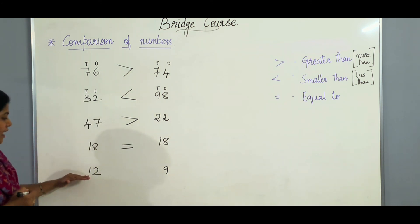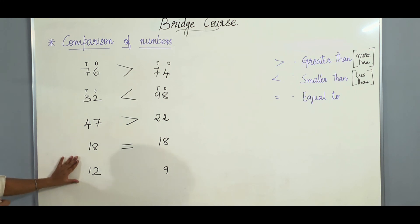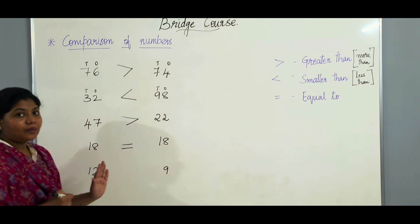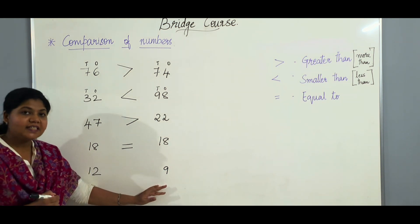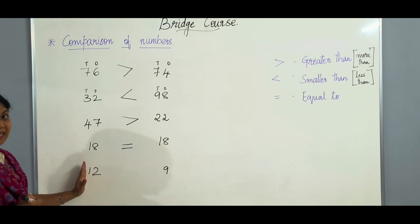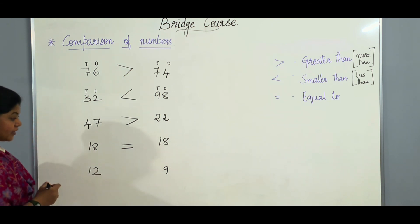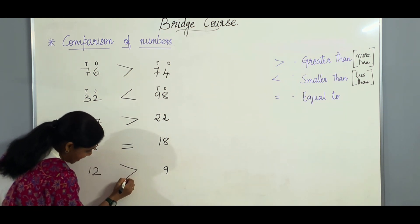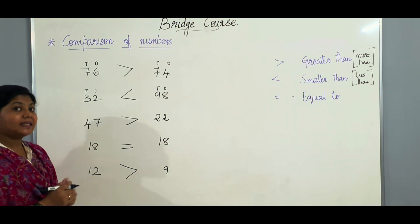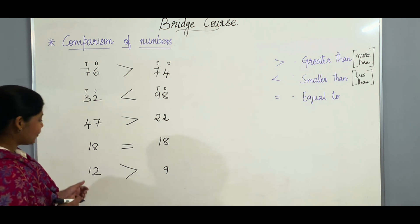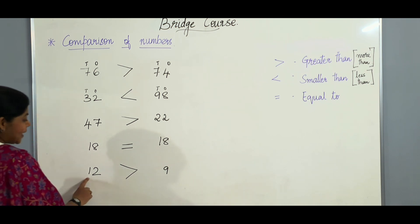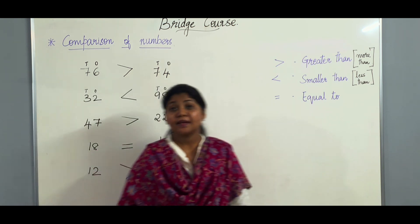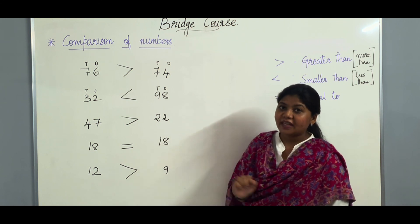Now let us go to the next example. Here we have the number 12 and here we have the number 9. It is very easy to find out that 12 is greater than 9. So we will be putting the greater sign towards the number 12, and we will be reading it as: 12 is greater than 9. I hope you have understood this comparison of numbers very clearly.